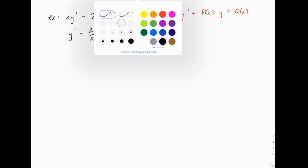Now we can pick out p(x). Notice that's negative 2 over x. Notice the negative sign carefully because the standard form has y prime plus p(x), so we need to account for that negative.